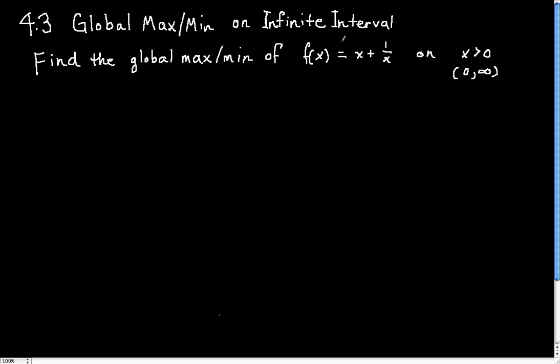Sometimes functions don't behave so well. And for example, maxes and mins might not exist. And here's a good example of that. So we're going to find the global max and the global min, if they exist, of the function f(x) = x + 1/x on the interval of positive numbers, so you could look at this as the interval (0, ∞).